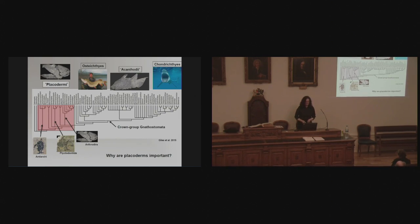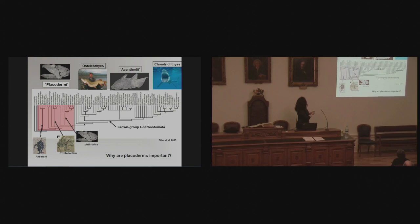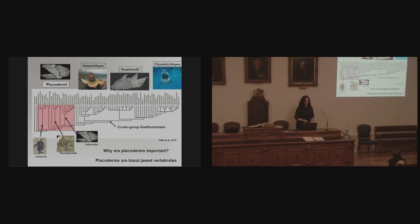Why are placoderms important? This cladogram shows the relationships of jawed vertebrates — you're a jawed vertebrate. Some groups will be familiar: the chondrichthians, the sharks, and the bony fish, the osteichthians. All this cladogram tells you is that bony fish and sharks are each other's closest relatives within the crown group Gnathostomata. Why placoderms are important is because in this cladogram they are at the base of the cladogram of jawed vertebrates. They are basal jawed vertebrates. If we want to interpret character evolution in major jawed vertebrate groups like chondrichthians and bony fish, we need to be studying those characters in placoderms.